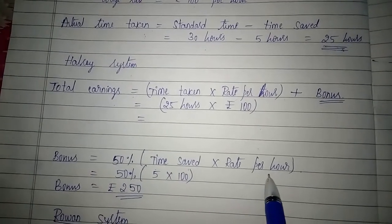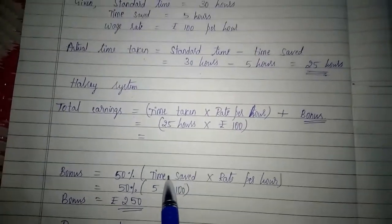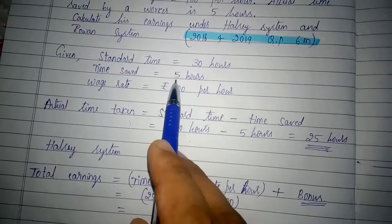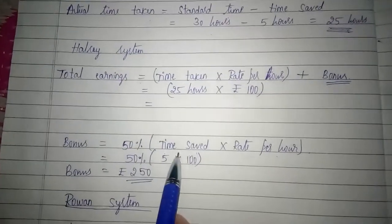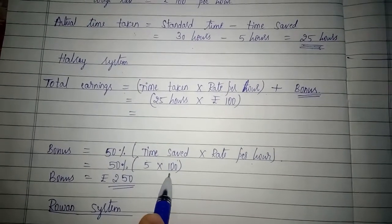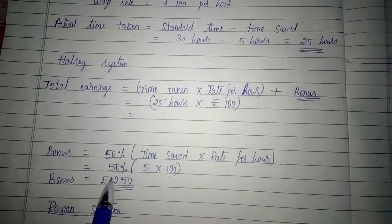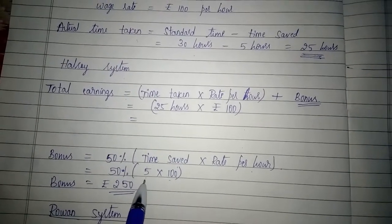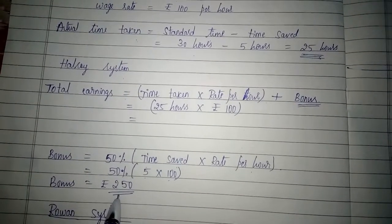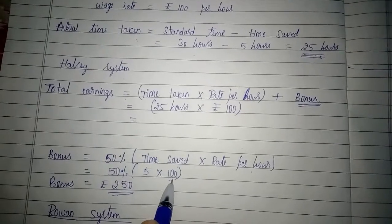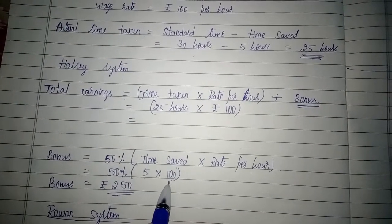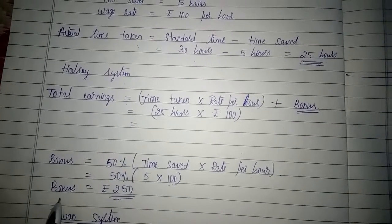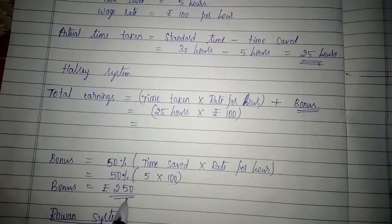The worker has saved 5 hours, and the rate per hour is rupees 100. So bonus = 50% of (5 × 100) = 50% of 500 = rupees 250. This is the bonus as per the Halsey system.